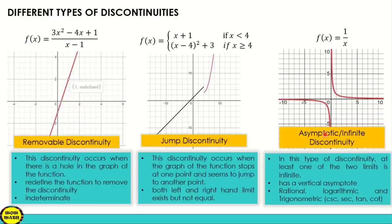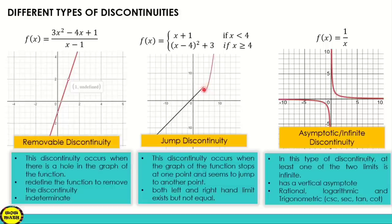To summarize the differences: when the graph has a hole or an open point, that is removable discontinuity — the function can be redefined to become continuous. When the graph stops and you need to jump to the next portion, that is jump discontinuity. When there is a vertical asymptote, that is infinite discontinuity.